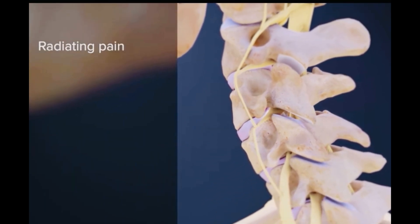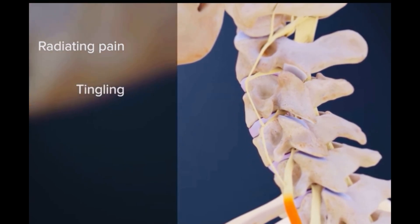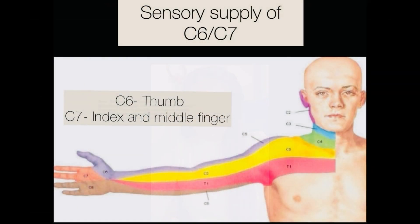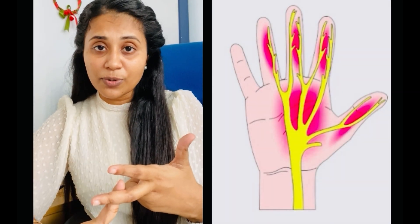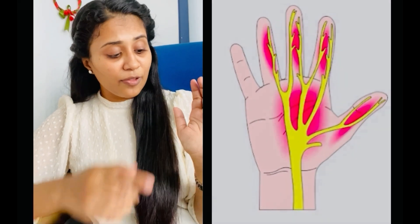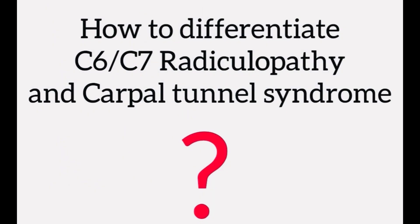Cervical radiculopathy leads to radiating arm pain, tingling sensation and numbness on the fingers, and weakness of the arm muscles. The problem is that compression at the level of C6 and C7 can also give pain along the first three fingers — C6 supplies the thumb and index finger, and C7 supplies sensory input to the index and middle finger. Irritation at C6 and C7 can therefore lead to the same symptoms as carpal tunnel.